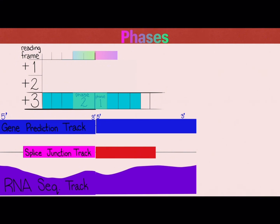Because frameshift mutations are risky business, the splicing machinery relies heavily on canonical splice site factors to ensure the end product is as evolution intended. As I say, biology is the study of accepted and evolving exceptions — a mutation might just save your life and future generations, or it could be the end of your bloodline.